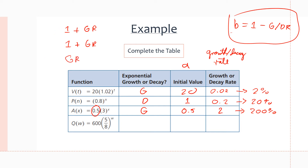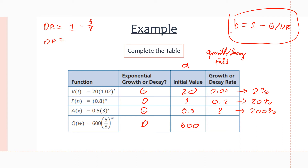Next and last: g(w) = 600 · (5/8)^w. It's decay because 5/8 is less than 1. The initial value is 600. The decay rate is 1 minus 5/8, which equals 3/8. In decimals, that is 0.375, so the decay rate is 37.5%.